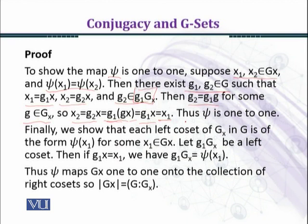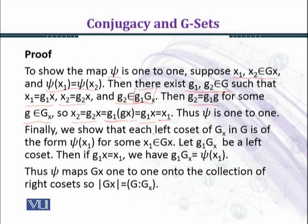So psi is 1-to-1 because x₁ equals x₂. We started by assuming psi(x₁) = psi(x₂) and we concluded that x₁ = x₂. Now we want to show that psi is onto, and if we show this then we will be successful in proving the first part of the theorem.